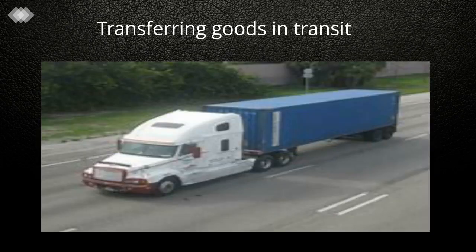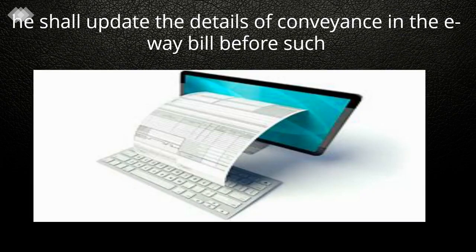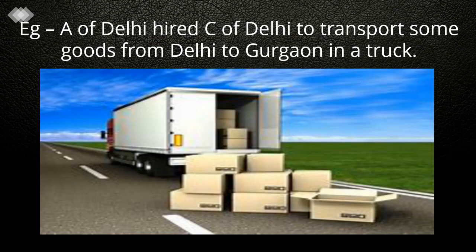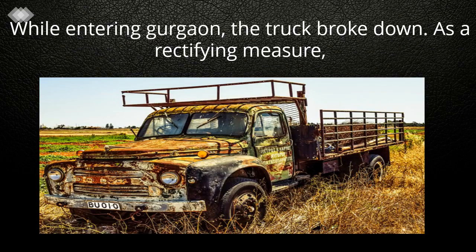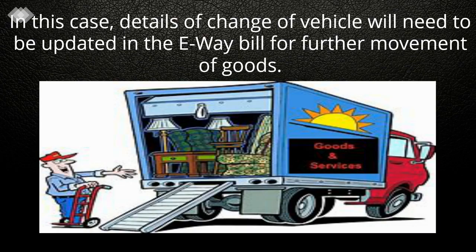Transferring Goods in Transit: If a transporter is transferring goods from one conveyance to another in the course of transit, he shall update the details of conveyance in the E-Way Bill before such transfer and further movement of goods. For example, A of Delhi hired C of Delhi to transport goods from Delhi to Gurgaon in a truck. While entering Gurgaon, the truck broke down. As a rectifying measure, C called another vehicle to supply the consignment. In this case, the details of the change of vehicle need to be updated in the E-Way Bill for further movement of goods.